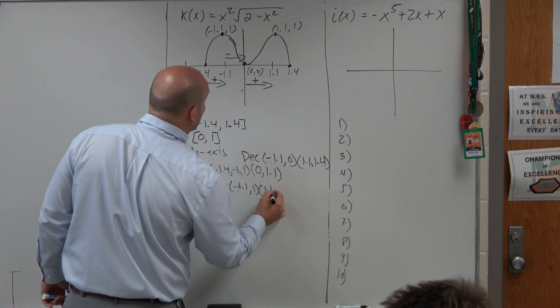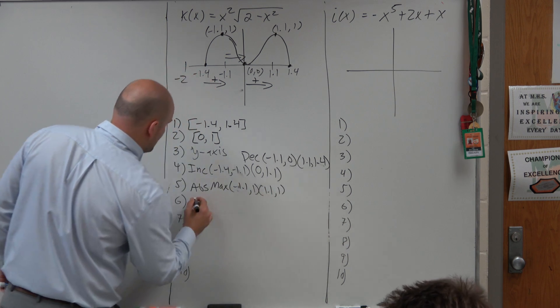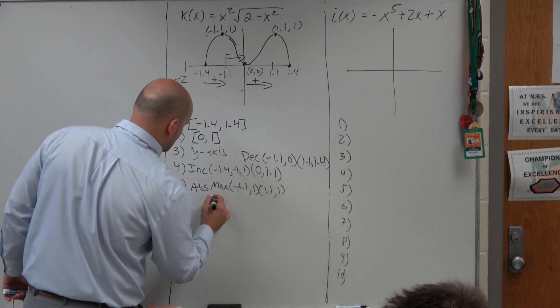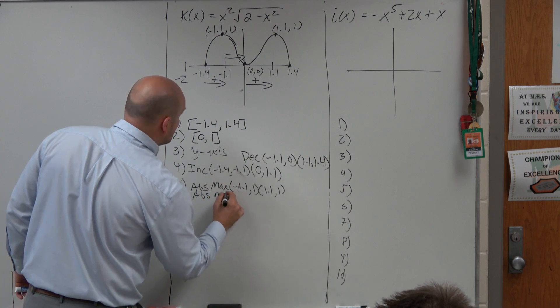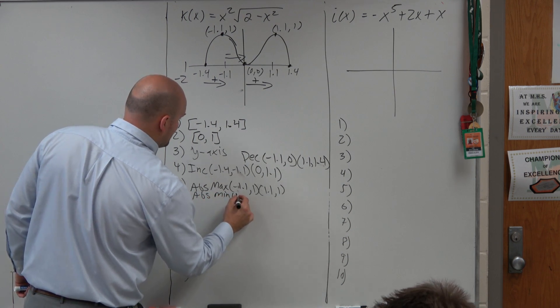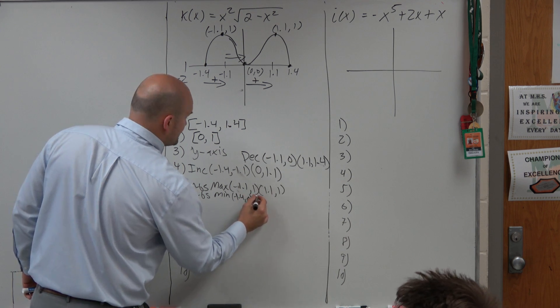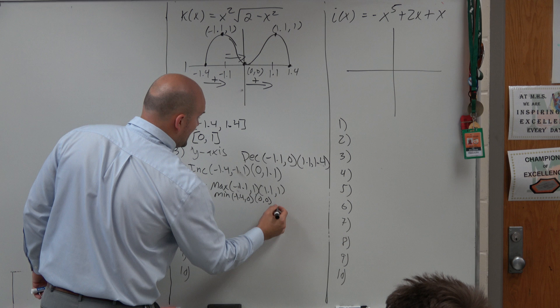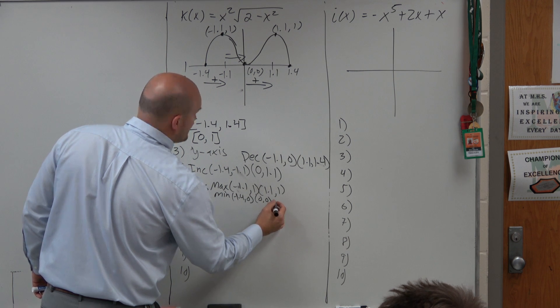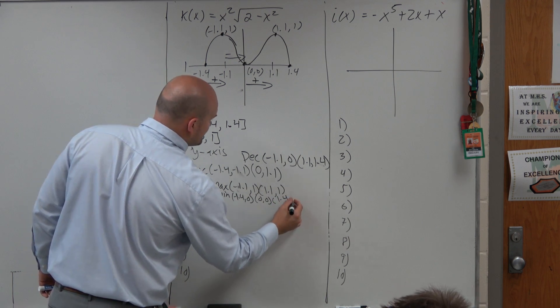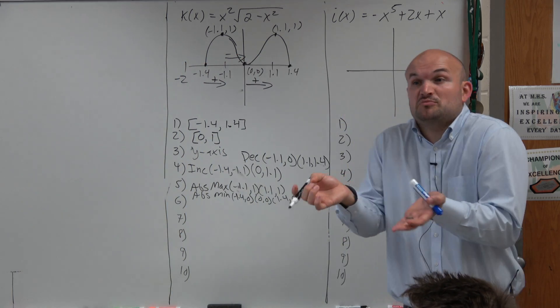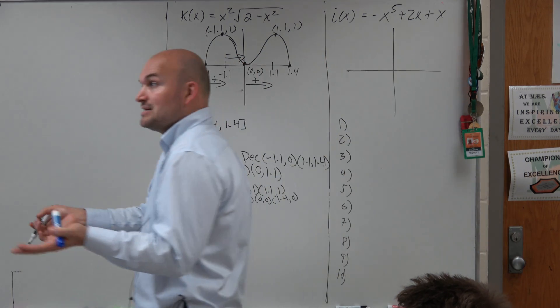1.1 and then our absolute min is going to be negative 1.4, 0, 0, 0 and 1.4 and 0. Sorry. It's kind of writing it down a little low. But you can have multiple absolute max and mins. That's possible.